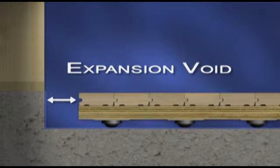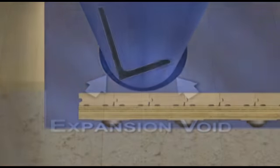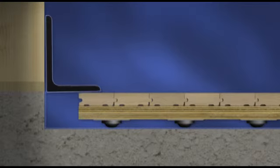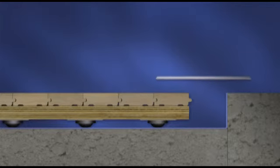Provide 2 inch or 50mm expansion voids at perimeters and all vertical obstructions. Install vent cove base over perimeter voids and metal thresholds at doorways.